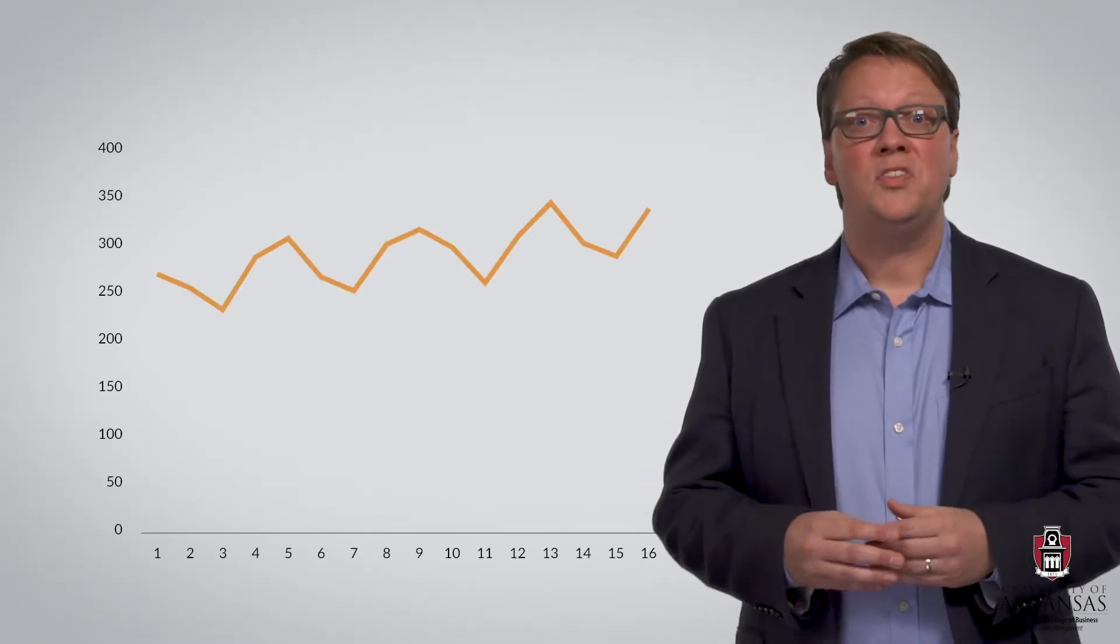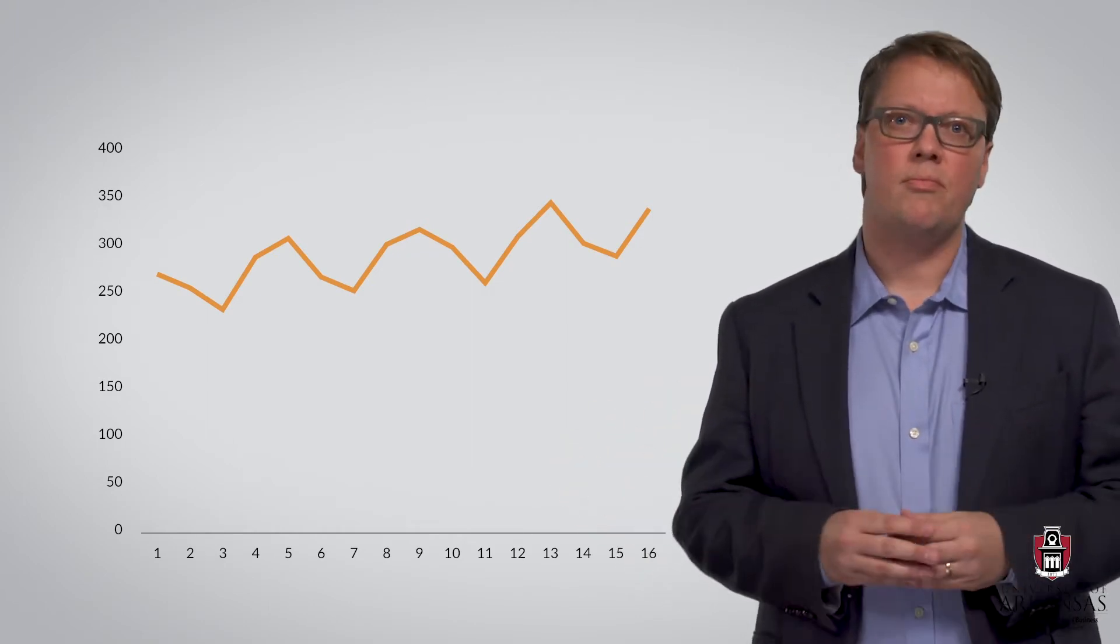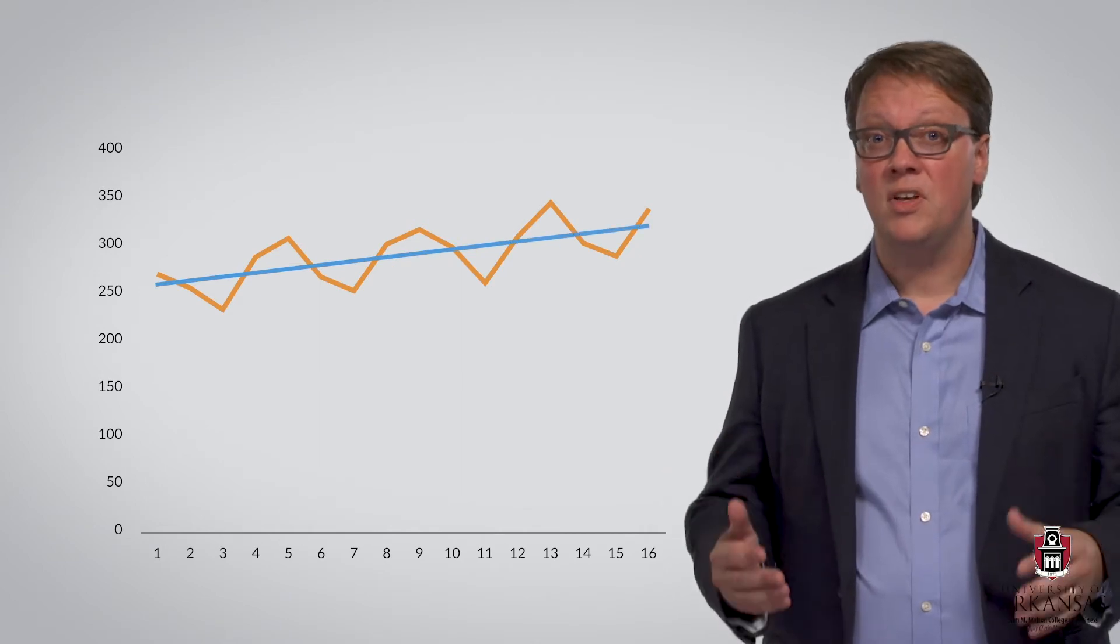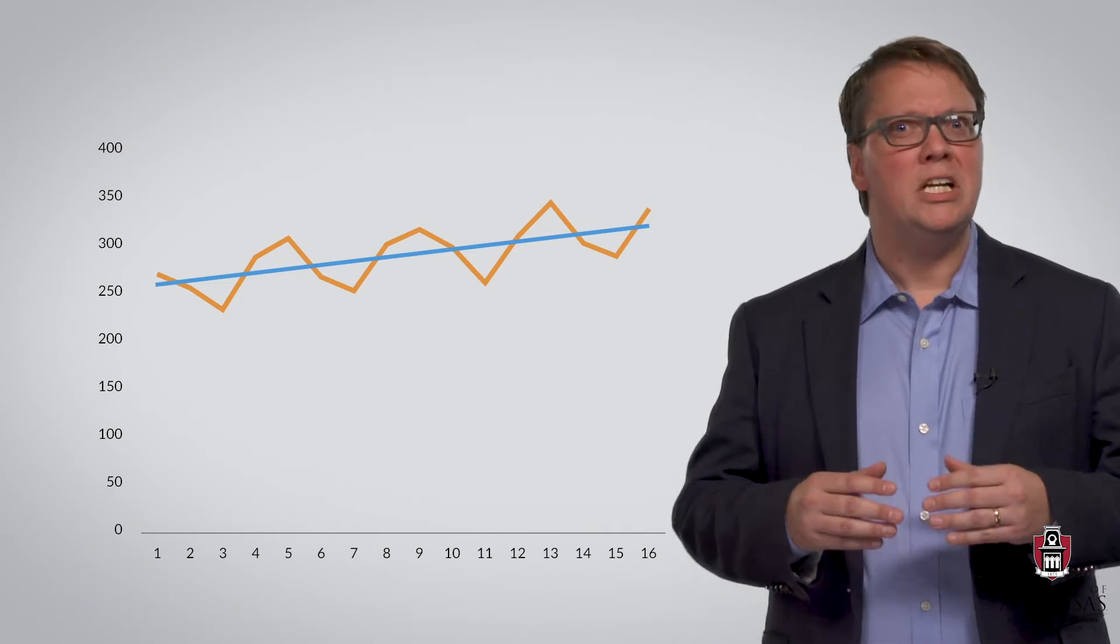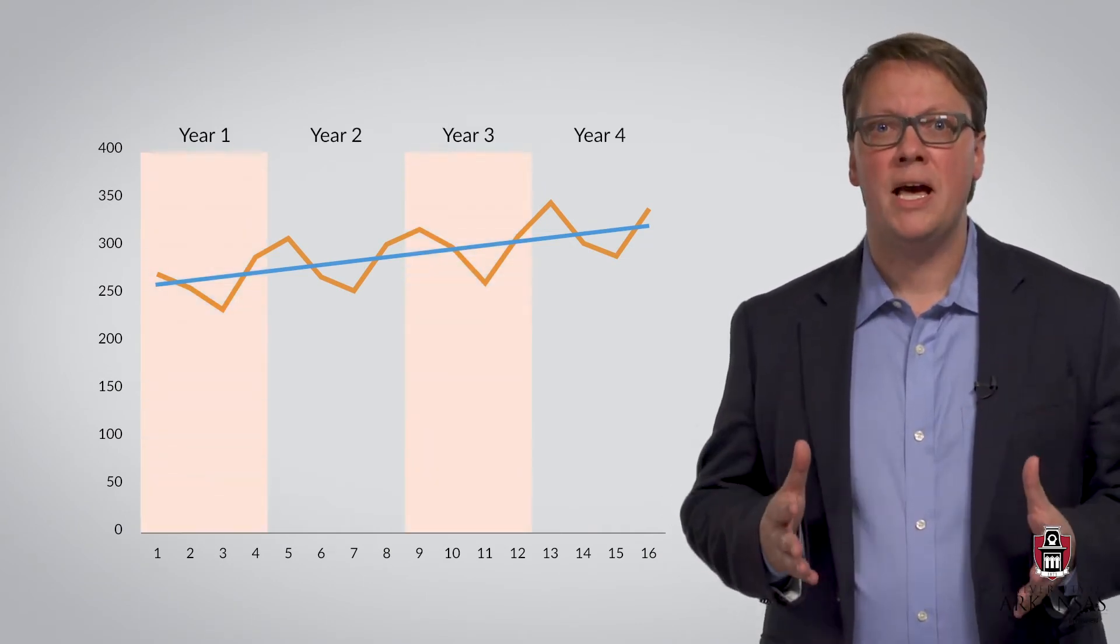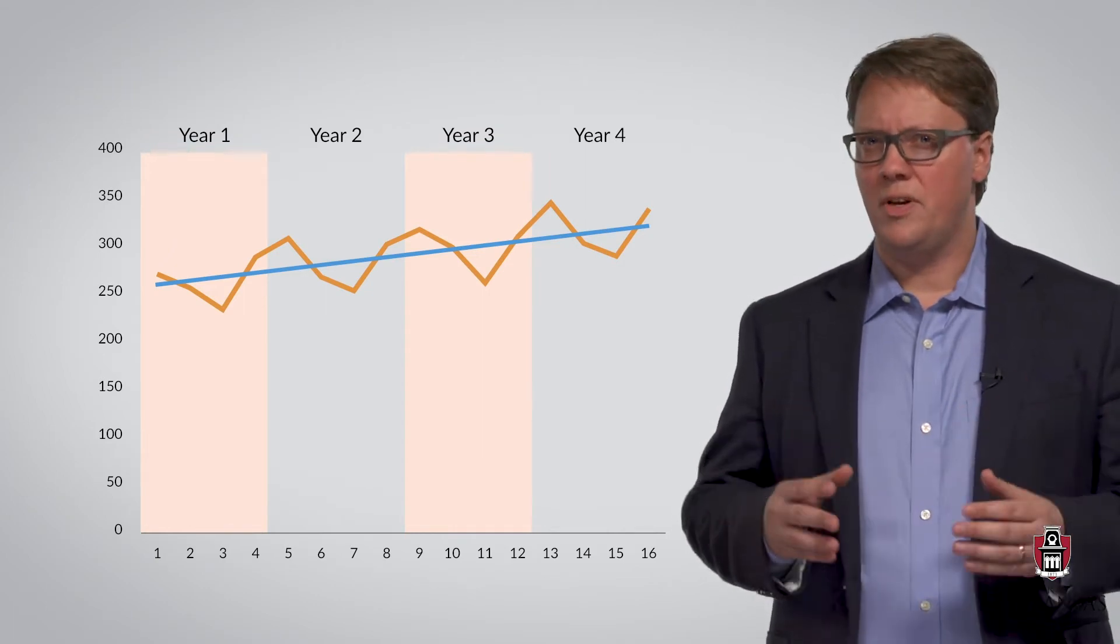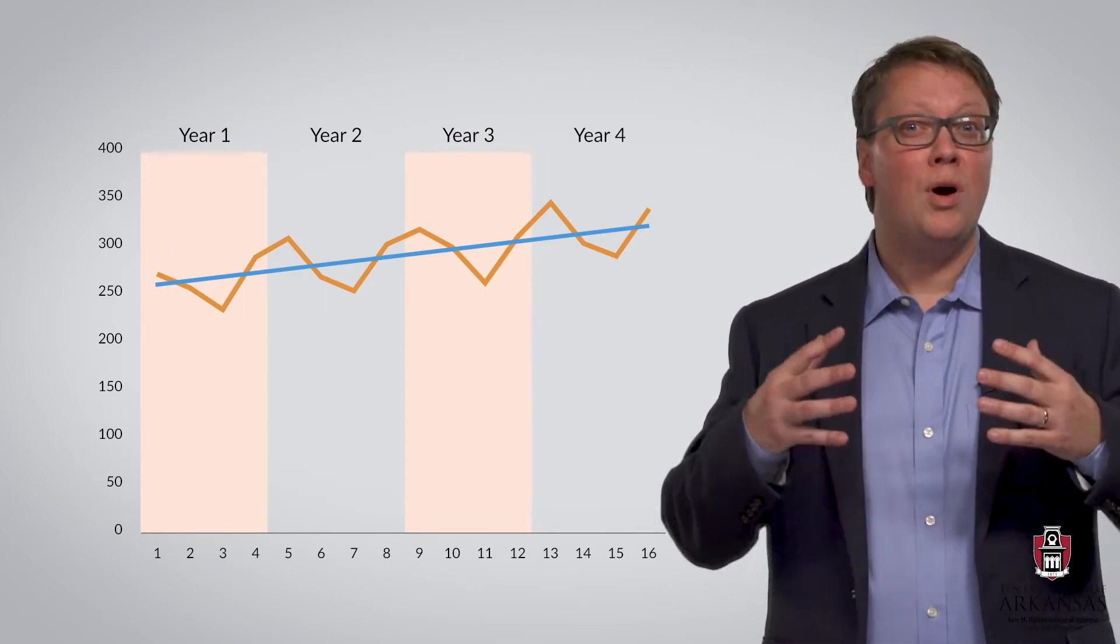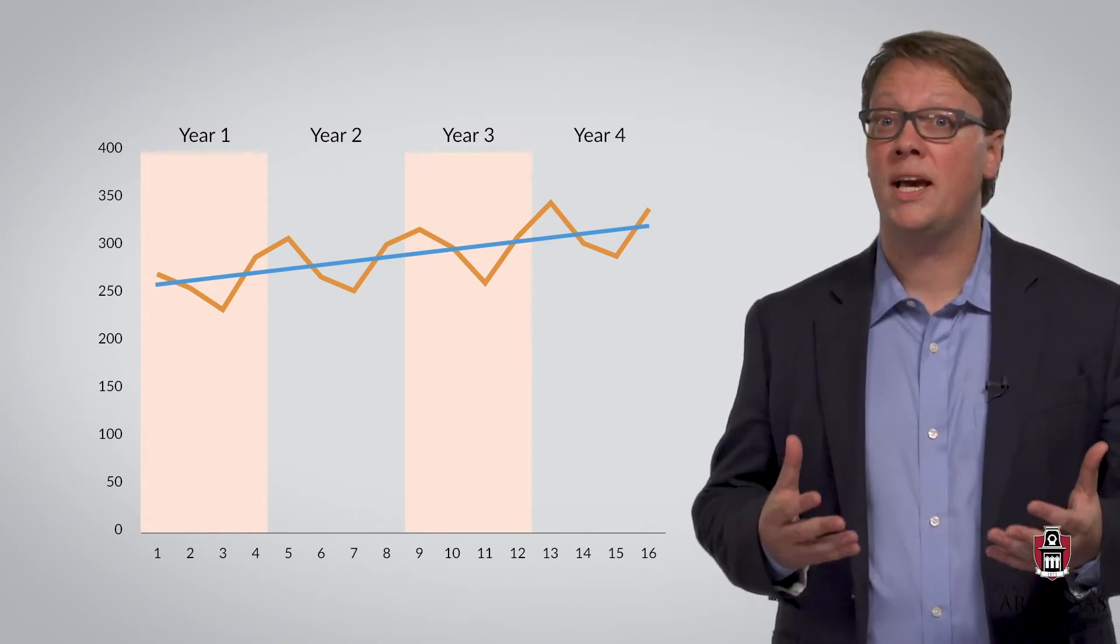Let's take a look at a sample data set of quarterly demand observations spanning four years. In this graph, we notice a positive trend, that is, demand is increasing over time. In addition, we can clearly discern seasonal patterns that are repeated each year. These observations make this data set a prime candidate for the application of Holt-Winter's forecasting method.